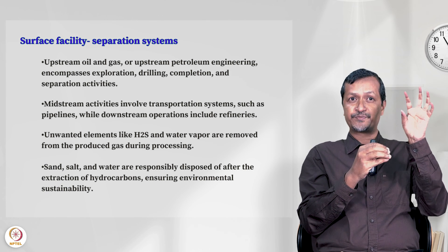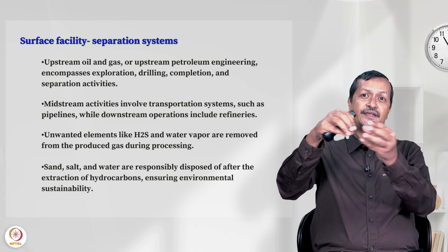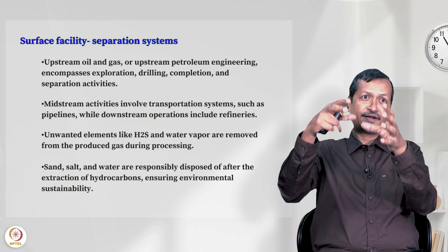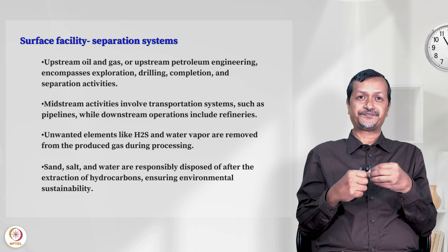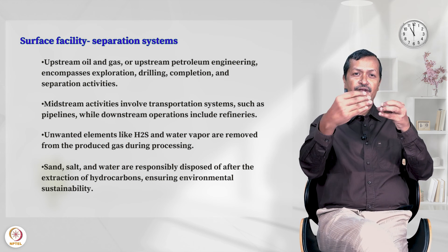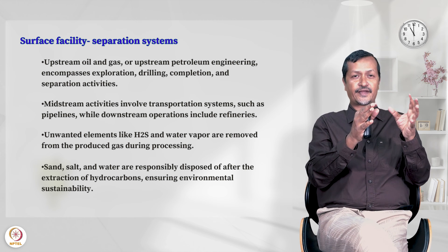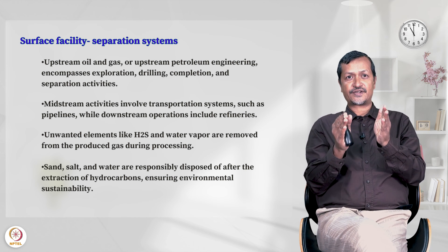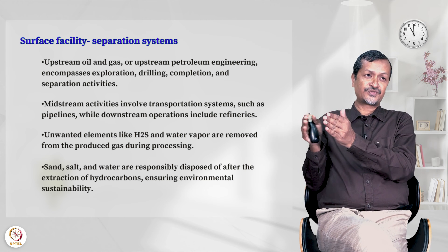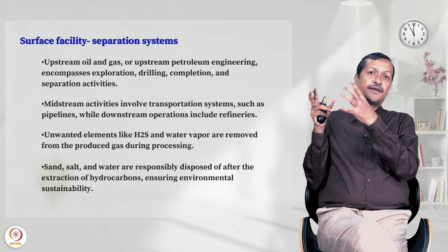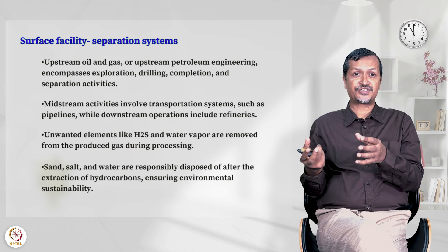For example, ONGC is producing gas — that gas goes to Indian Oil people, Indian Oil people fill it in the Indian cylinder, and then send it to your house. If you are getting crude oil, you must remove water content, salt, and sand. After doing all this, you transport through pipeline or tanker to the downstream section. The downstream section contains refineries that do fractional distillation.